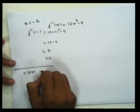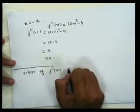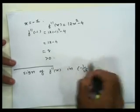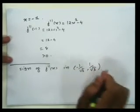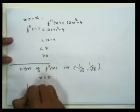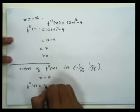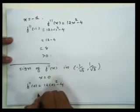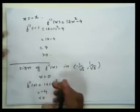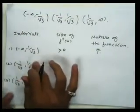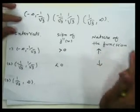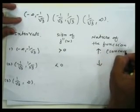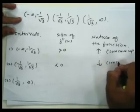For the interval (-1/√3, 1/√3), choose x = 0. Then f''(0) = 12(0)² − 4 = −4 < 0. So f''(x) < 0 in (-1/√3, 1/√3), which means the function is concave down on this interval.